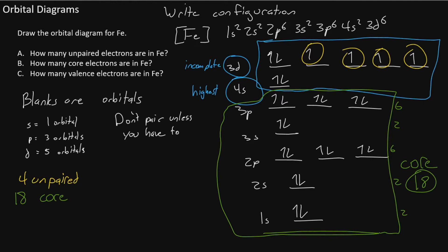Now let's check our valence. That's the 3d and the 4s. The 3d has 6 electrons: 1, 2, 3, 4, 5, 6. And the 4s has 2 electrons. Add these together and we'll get 8 valence. So now we have the number of unpaired electrons, the core electrons, and the valence electrons.